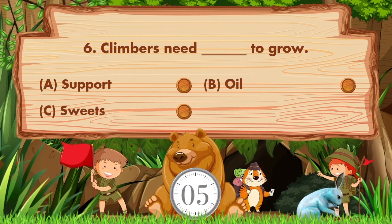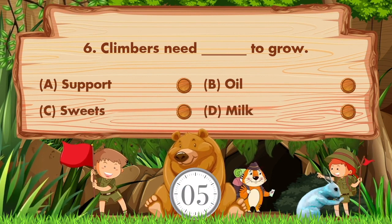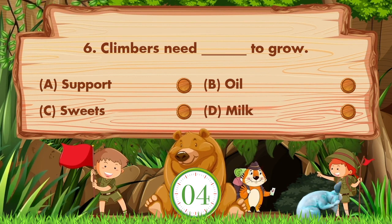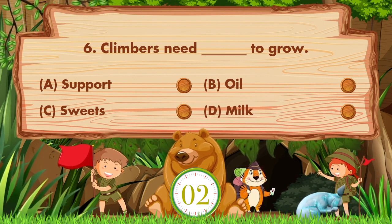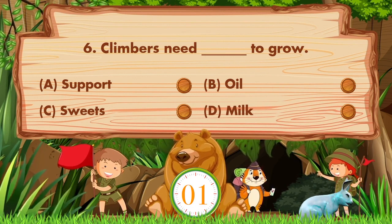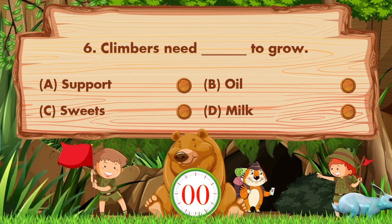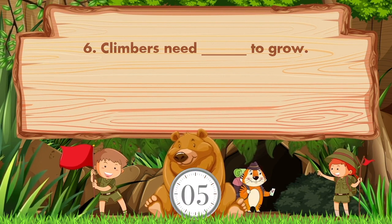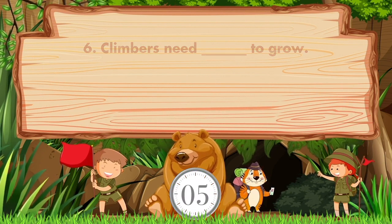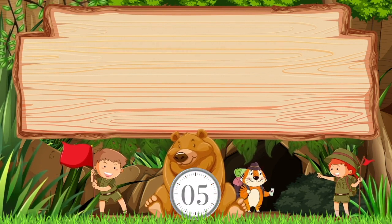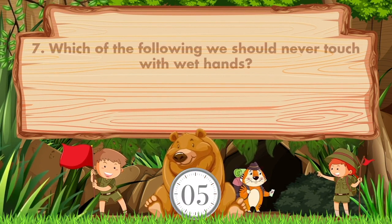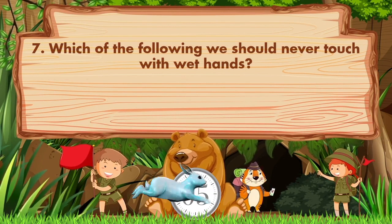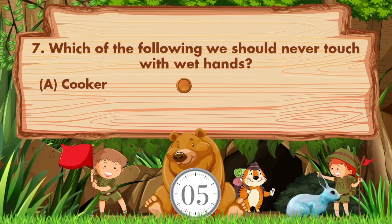Climbers need blank to grow — option A is support, B oil, C sweets, D milk. Answer is option A: support.